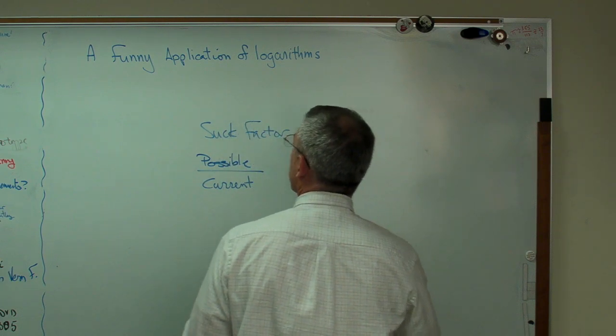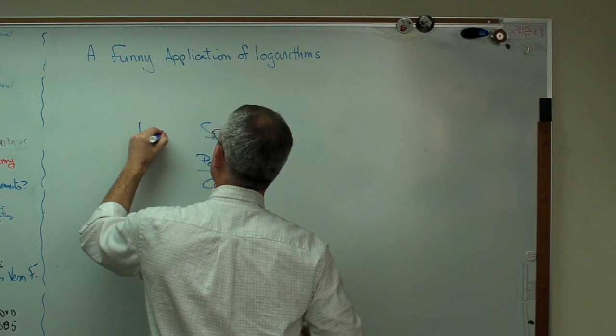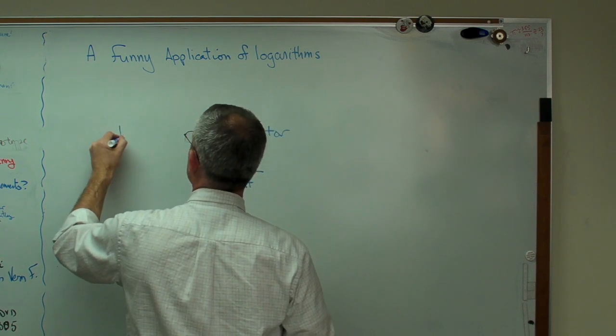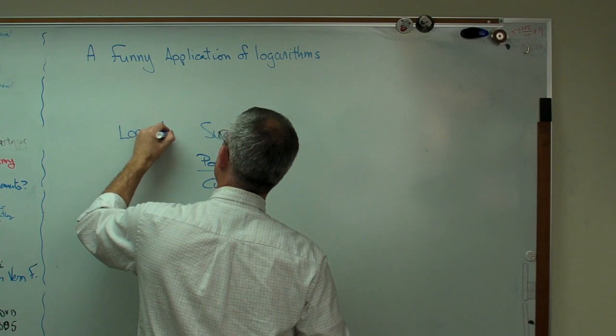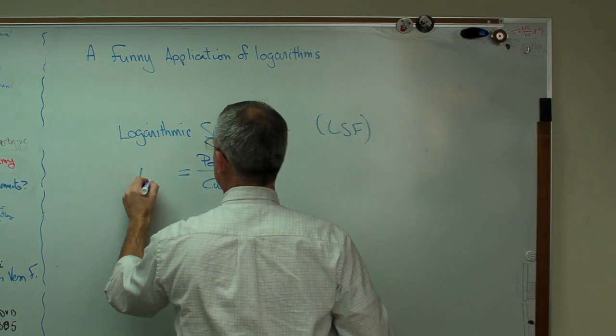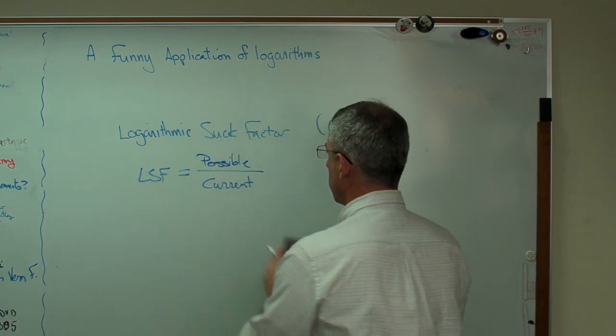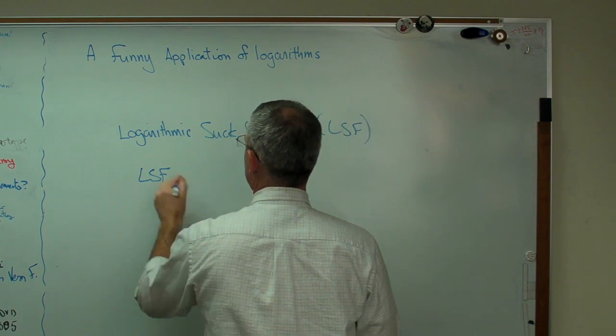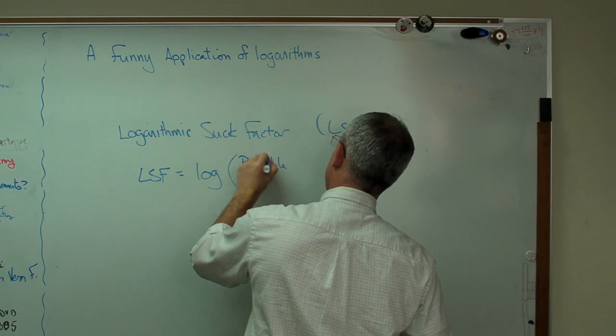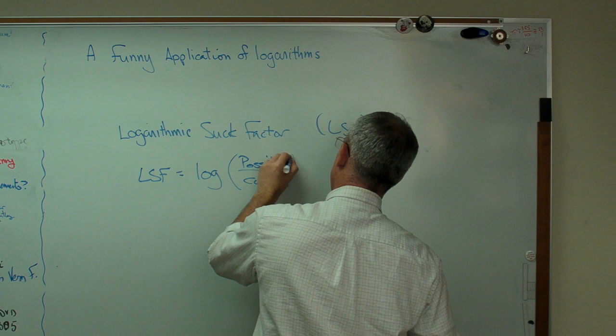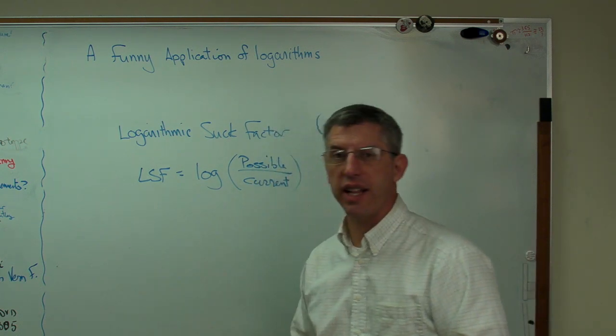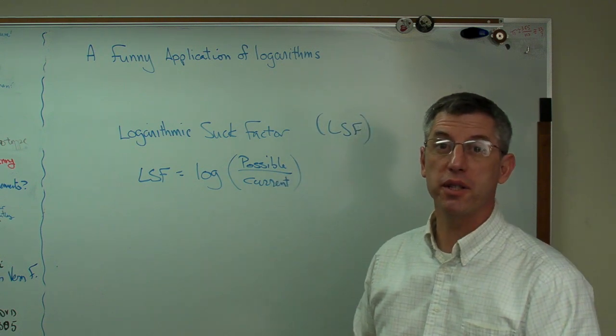Rather than relative suck factor, we're going to have the logarithmic suck factor. We'll call that LSF rather than RSF. So, rather than possible over the current by itself, we'll take the base 10 log. That's possible over current, maybe undesirability. In American slang, that would be the relative suckiness of those two possibilities.